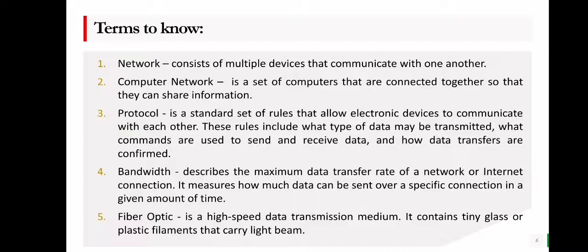The first term is network. A network consists of multiple devices that communicate with one another. Next is computer network — it is a set of computers that are connected together so that they can share information. We are talking about multiple computers, two or more, that are connected to each other in order to share different information like files, photos, documents, and many more.